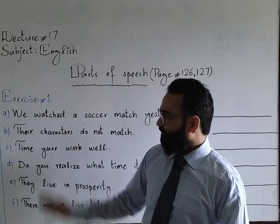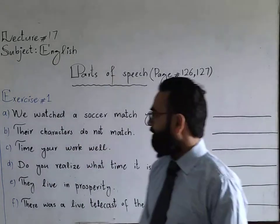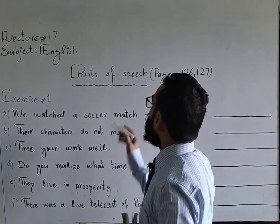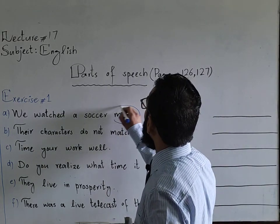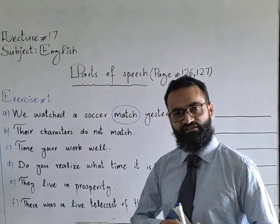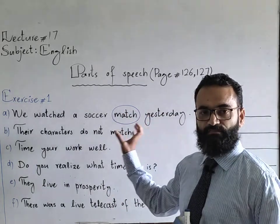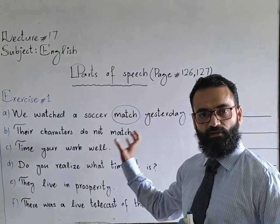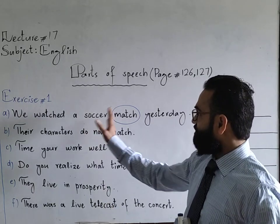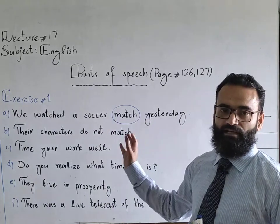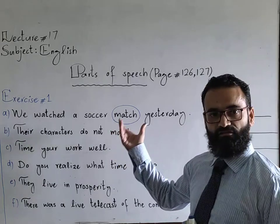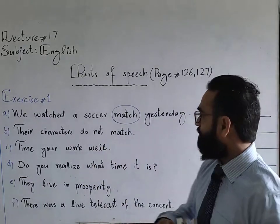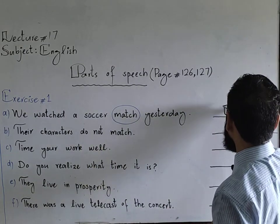If you look at sentence number one: 'We watched a soccer match yesterday.' In this particular sentence, you may find the word 'match' in bold print. It is the name of a thing — a name of a place, person, or thing. This is the name of a thing. So, match is used as a noun in this sentence. Draw a line in front of every sentence and write noun over there.